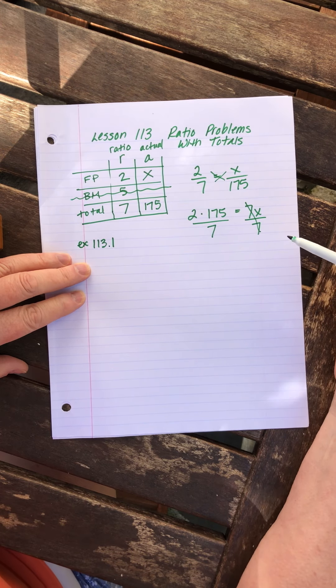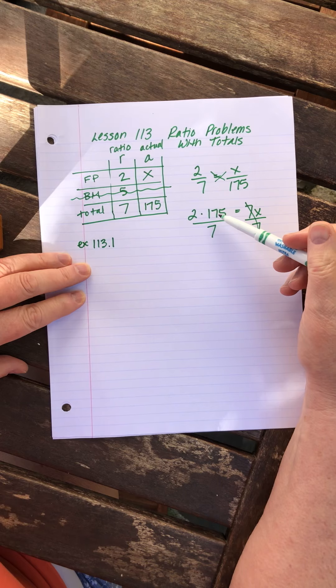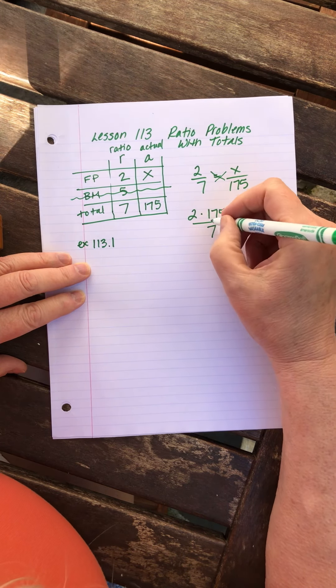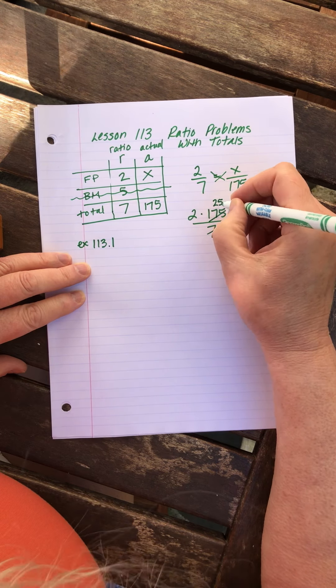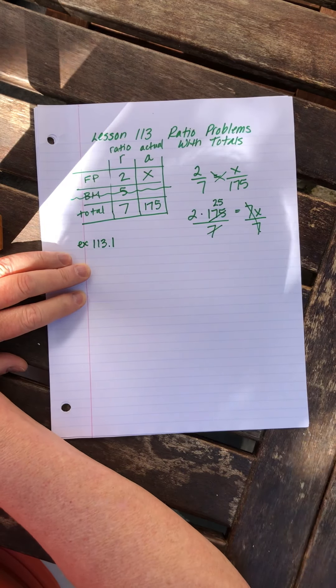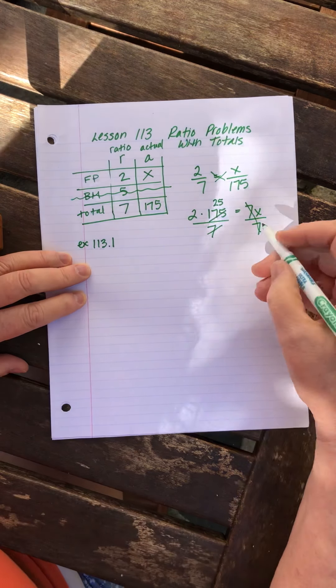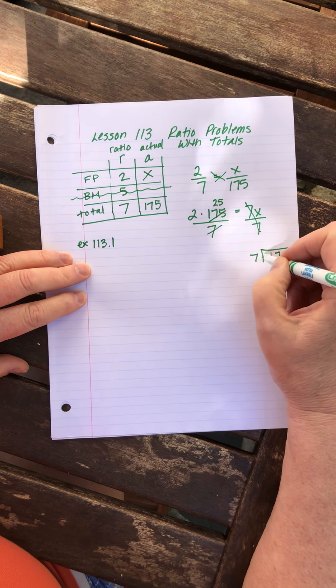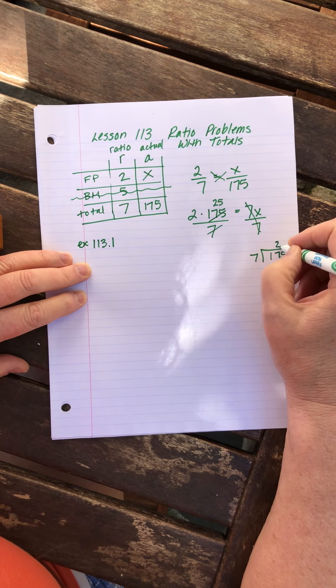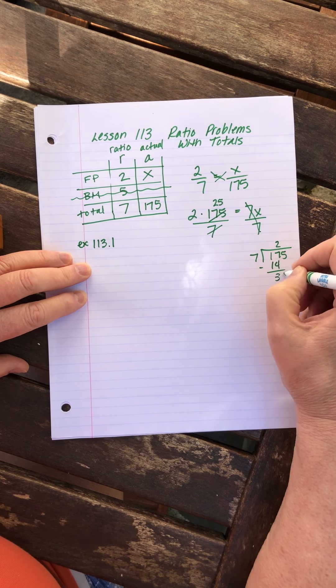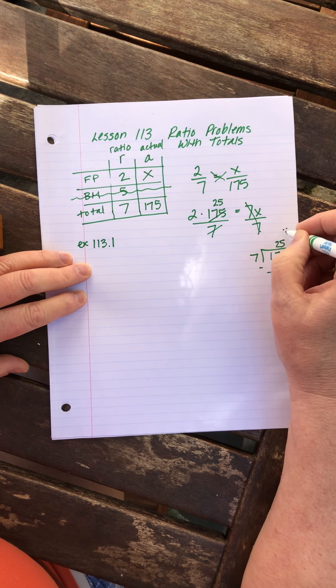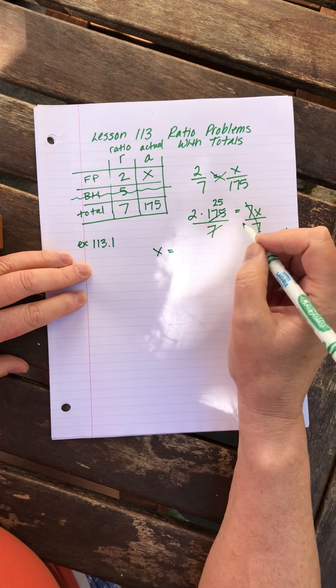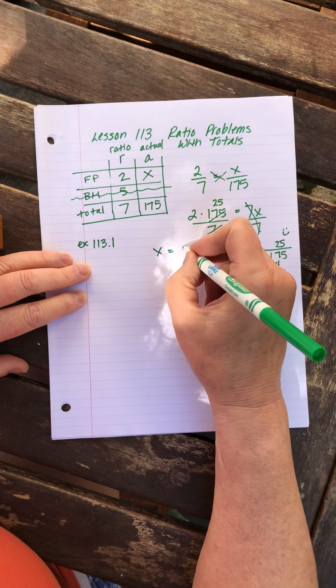We'll multiply at the end. Now 7 into 175, that seems like a hard number, but I immediately think 7 quarters would be a dollar and 75 cents, right? So that tells me that 7 must go into 175 25 times. Let's practice, let's just do it and make sure we're right. 7 into 1, no. 7 into 17 twice, 14, subtract, 35. There it is, yay, we proved it.